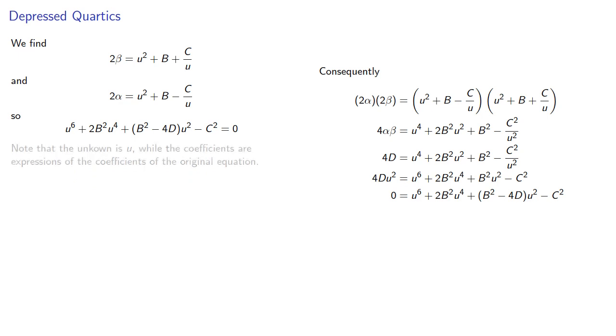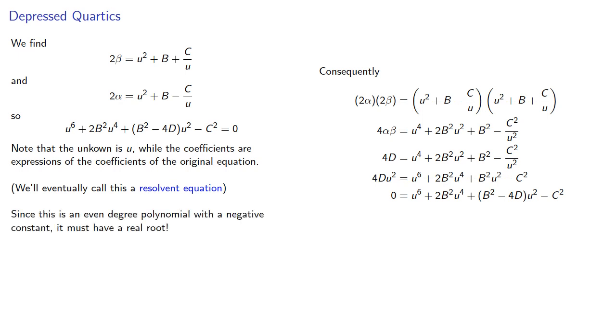Note that the unknown is u, while the coefficients are expressions of the coefficients of the original equation. We'll eventually call this a resolvent equation. What's important in this case is this is an even degree polynomial with a negative constant, so it must have a real root.